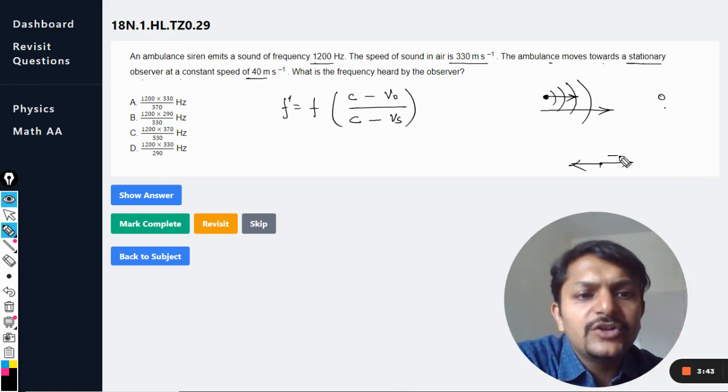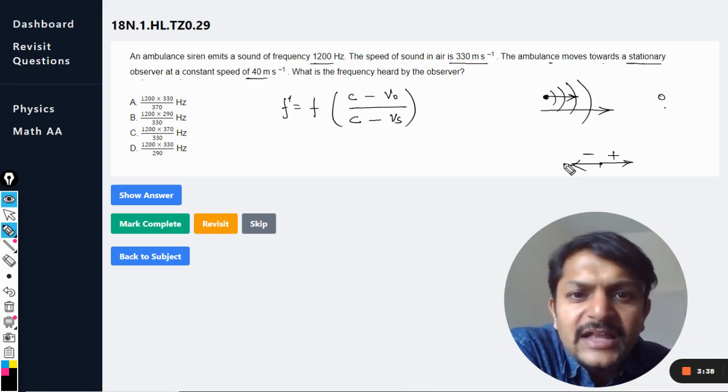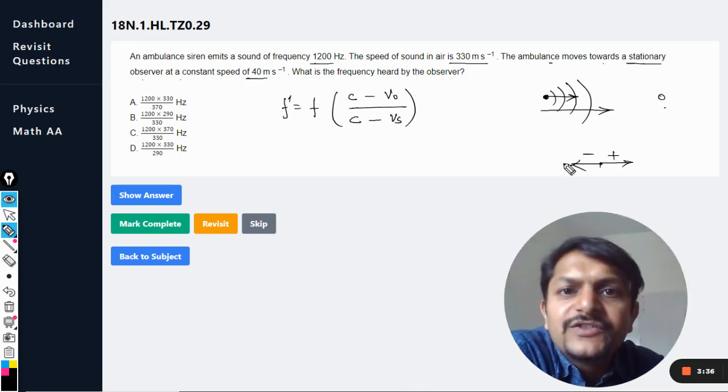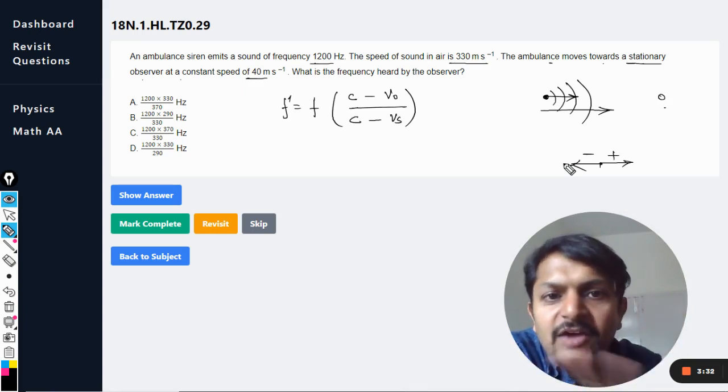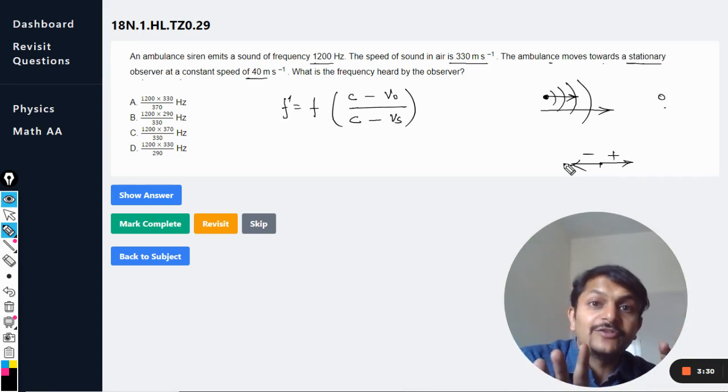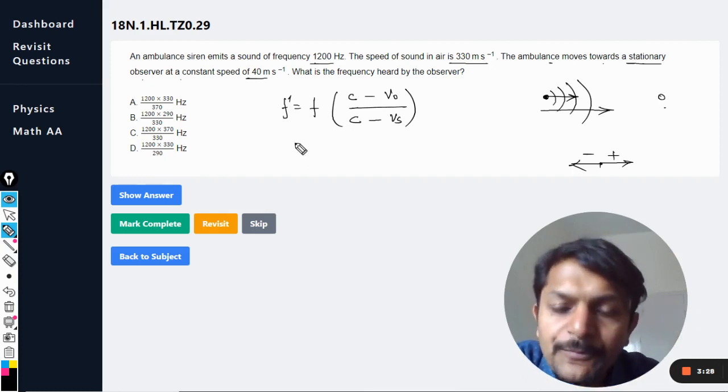Along with that, we are going to have a sign convention. You can choose any sign convention. We are choosing this direction as positive, this as negative. You can use any sign convention, and then you can just plug in the values for the velocities with the sign convention and everything will fall in place. You will get the correct answer.